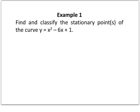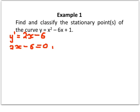Here's our first example. We're going to find and classify the stationary points of the curve y = x² − 6x + 1. Our first step is to find dy/dx. I'm going to use y′ but it means the same thing. Differentiating the curve, we get y′ = 2x − 6. Step two, we solve dy/dx = 0, so we solve 2x − 6 = 0, which gives x = 3. So a stationary point occurs at x = 3.